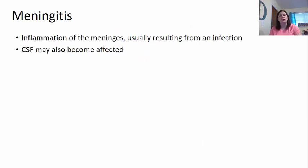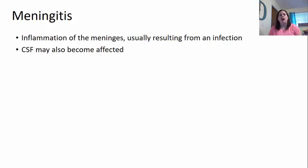We're going to pick up where we left off in class. We finished talking about cerebral palsy, so we're going to continue on with meningitis through the rest of the chapter. Meningitis is inflammation of the meninges — the special covering that went around the brain offering protection. This is usually resulting from some sort of infection. The cerebral spinal fluid may also be affected due to the meninges being inflamed.